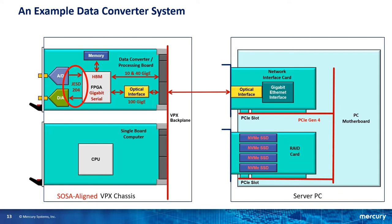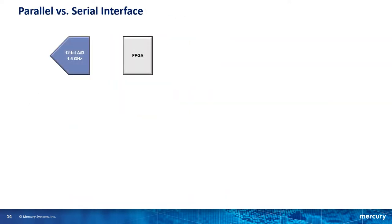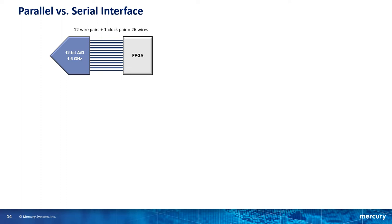So let's start with JESD204. Here I'm showing an A to D and FPGA, but it would be the same drawing if it was a D to A converter. To look at serial interfaces like JESD204, it's a good idea to first look at parallel interfaces that have been used for many years. With a 12-bit A to D, we would have 12 pairs of wires each carrying one of the bits of data that make up the 12-bit sample, and an additional pair to carry a clock. This is a simple and effective solution. I showed an A to D with a sample rate of 1.6 GHz, because that's about the highest sample rate you can support with this model. The limit is the speed of the parallel interfaces on the FPGA — they can run at about 800 MHz, and with double data rate clocking you can achieve 1.6 GHz.